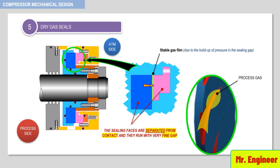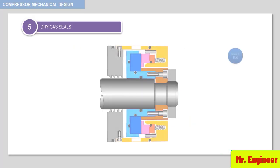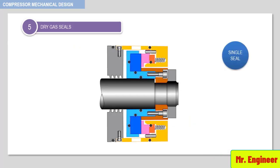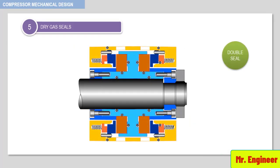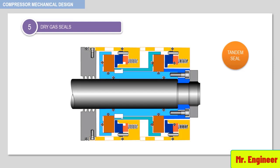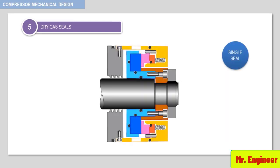Dry gas seals exist in various arrangements: single seal, double seal, or tandem seal. The single seal is used for compressors which have lower sealing pressures and where a small leakage of gas medium can be tolerated.